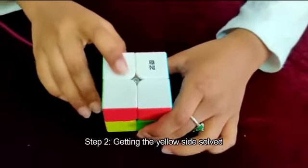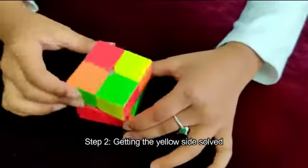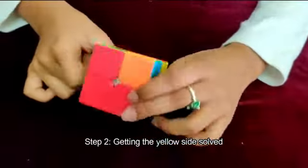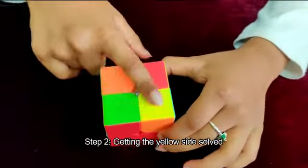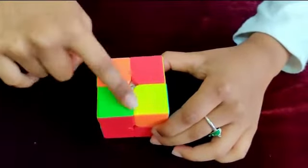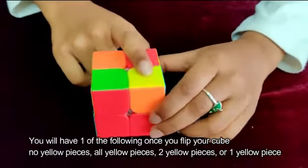Now we have the white side solved, so let's move on to step two, getting the yellow side solved. So in this step, you'll either have no pieces, all the pieces, two pieces, or one piece on this yellow side.